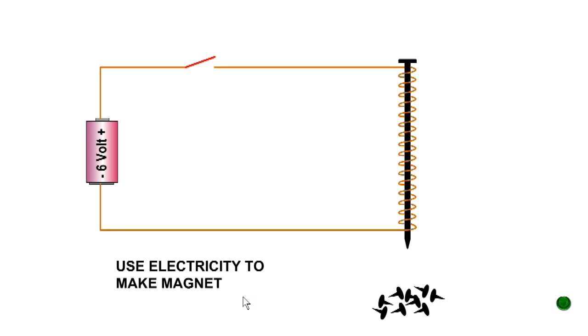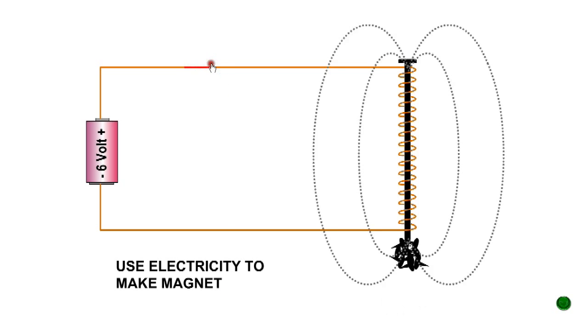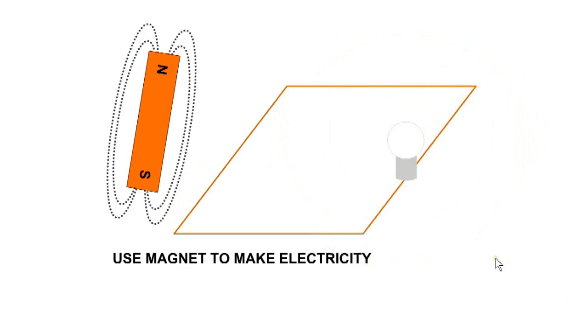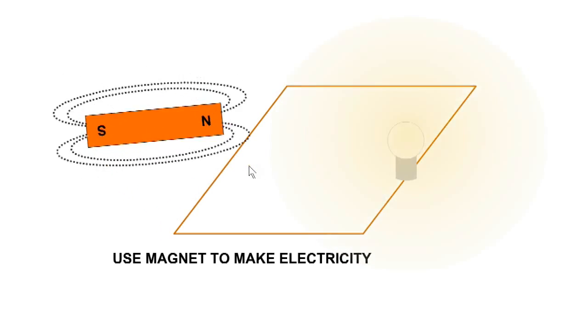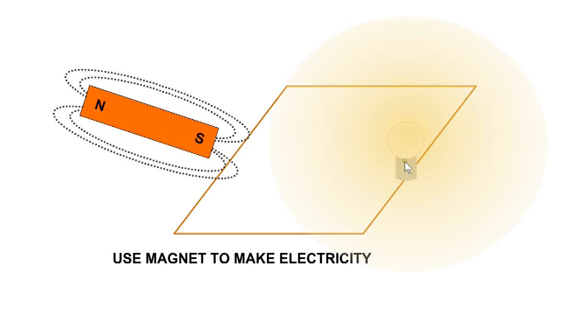There is a close link between electricity and magnetism. Electricity can be used to make a magnet, or a magnet can be used to make electricity. When the magnetic field moves past the conductor, electricity is induced.